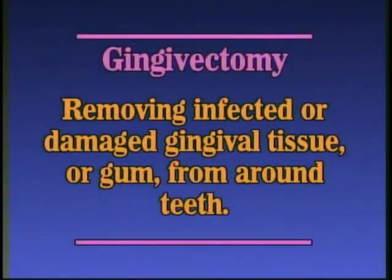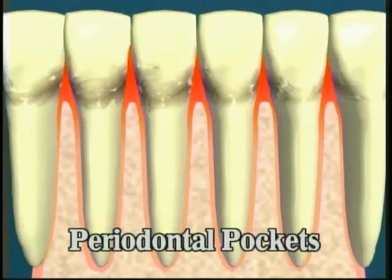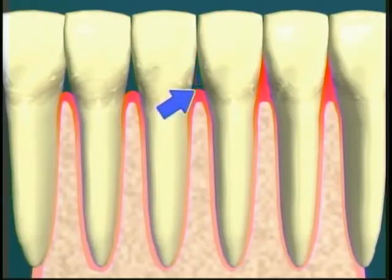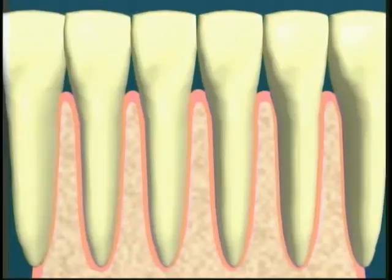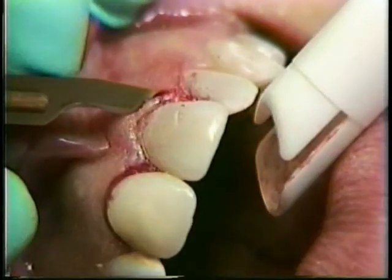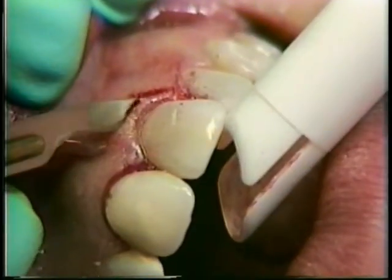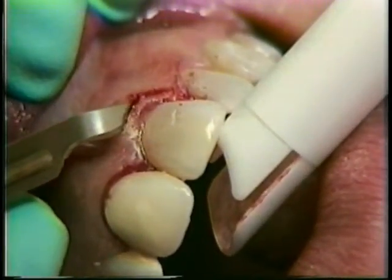Gingivectomy involves removing infected or damaged gingival tissue or gum from around the teeth. Removing swollen tissue by performing a gingivectomy procedure eliminates periodontal pockets and makes it easier for the patient to clean the plaque from around the teeth. Performing a gingivectomy procedure is very similar to trimming cuticles from around the teeth.